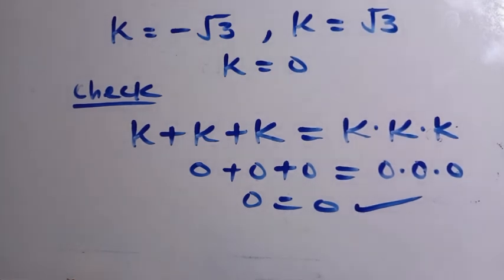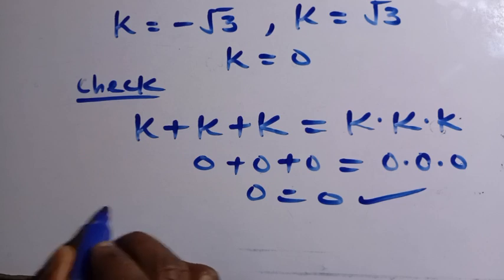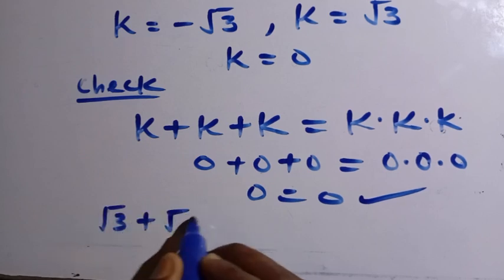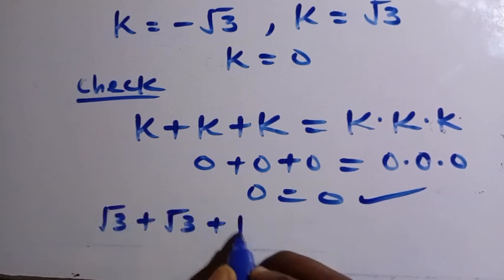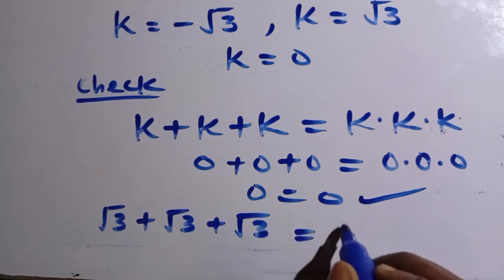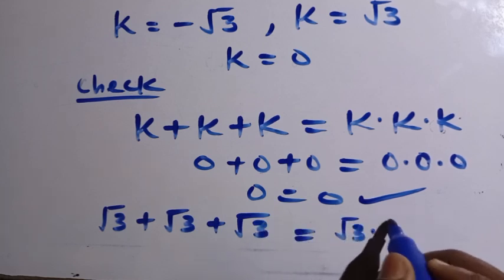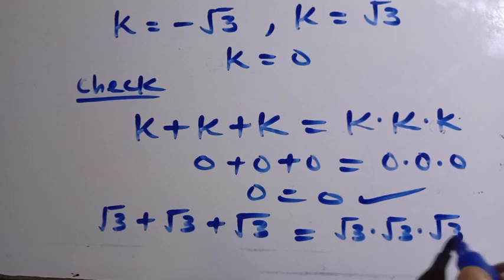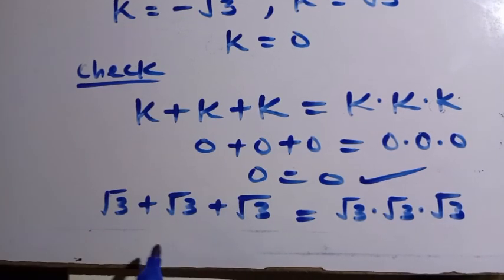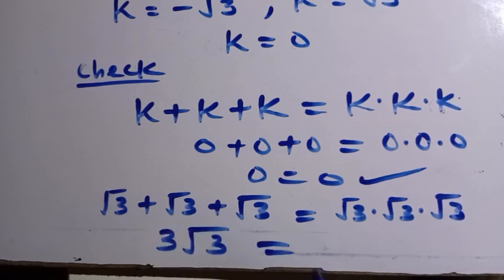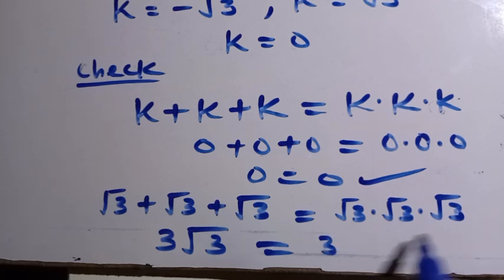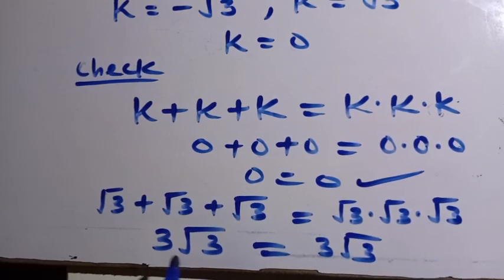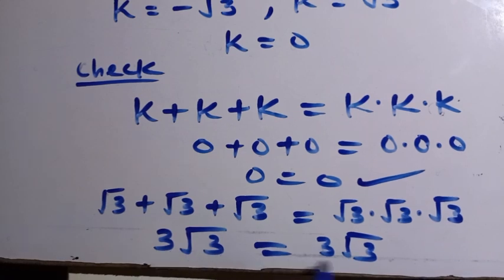And also for the other part, let's say we have our K equals to root 3. So when we try and replace it, we have root 3 plus root 3 plus root 3 equals root 3 multiplied by root 3 multiplied by root 3. So here we add all this together, so it becomes 3 root 3 equals. Let's say we multiply root 3 and root 3 together, so this becomes 3, then multiply by root 3. So at these two sides we have 3 root 3 equals to 3 root 3, it means this also valid for it.